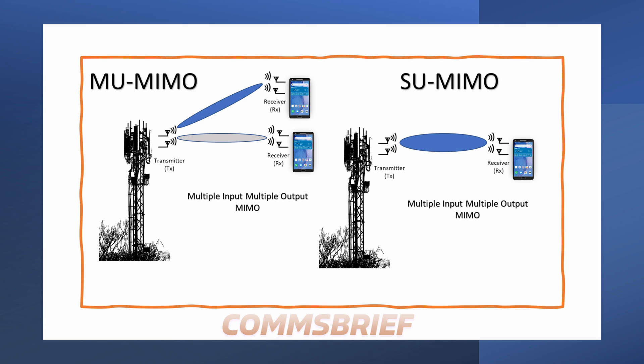This allows antenna elements to communicate multiple data streams in parallel between the transmitter and receiver, efficiently utilizing the same time and frequency resources. For example, the original LTE uses a MIMO configuration of 4x4 for downlink, which means there are four communication layers in the downlink. Downlink is communication from the base station to the mobile phone, or from the cell tower to the cell phone.